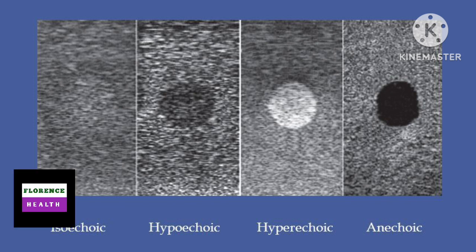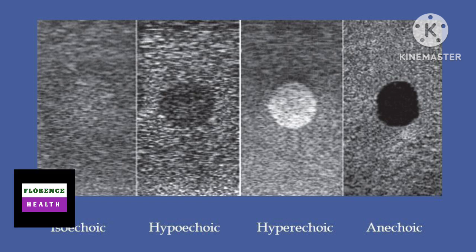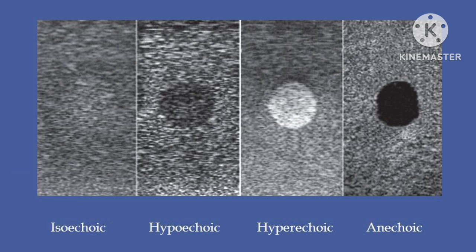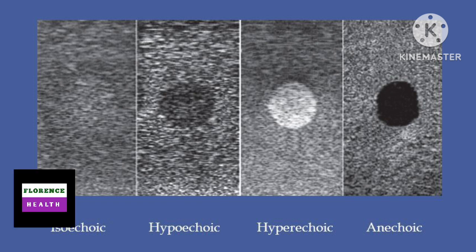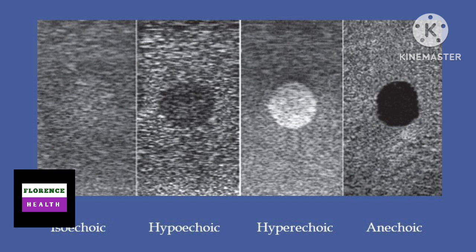By comparing between two structures, two organs, or an organ with its surrounding structure, you can label a focus as hypoechoic, hyperechoic, isoechoic, or anechoic. On the first image, the lesion is isoechoic, meaning it has the same level of echoes compared to the surrounding structure.